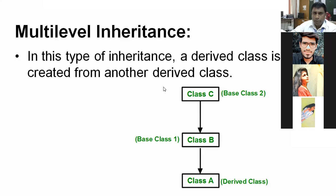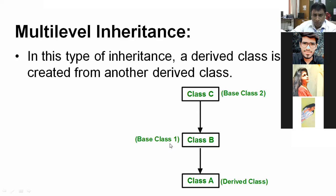This is multi-level inheritance: class C is the base class, class B is the derived class for class C, but class B is also the base class to class A.